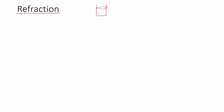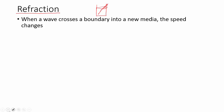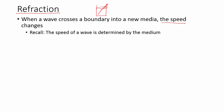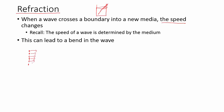Refraction is something you're all familiar with — you've seen it happen. If you've ever looked in a glass of water with a spoon in it, the spoon looks like it breaks at the surface. That's because when the light came out of the water it bent, and your eye interprets that as broken. Refraction occurs when a wave is transmitted across a boundary into a new media, and it's due to a change in speed. The medium determines the speed of the wave, so when a wave moves from one media to another, its speed changes.